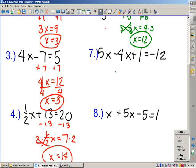Number 7: I need to combine those x's first. So 5x take away 4x is just 1x plus 1 equals negative 12. Subtract the 1 from both sides. So 1x equals negative 13.